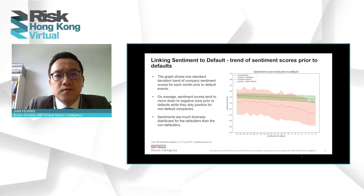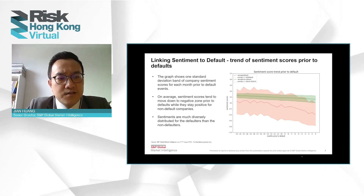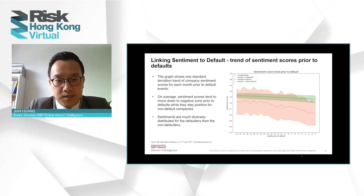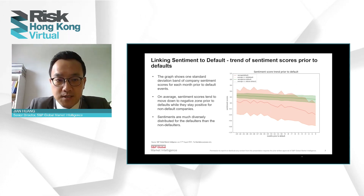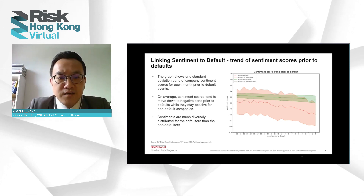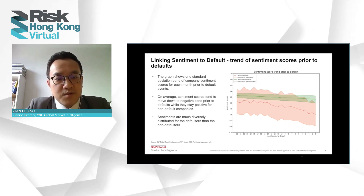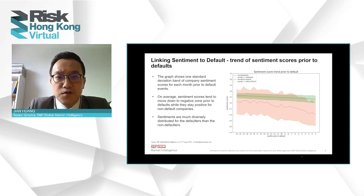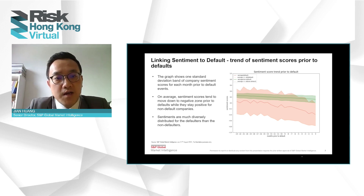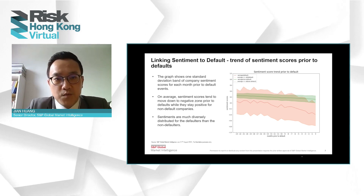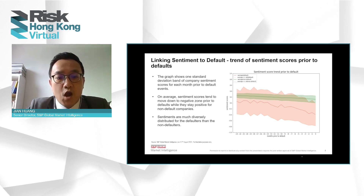Once we have the sentiment score, the natural next step is to build a model that can link the sentiment score to the assessment of creditworthiness of a company. This slide shows preliminary analysis our team has conducted. The graph shows one standard deviation band of company sentiment scores for each month prior to each default event. On average, sentiment scores tend to move down to negative 12 months prior to default, while they stay positive for non-defaulters. Sentiments are much more diversely distributed for defaulters than for non-defaulters. This sample is from our NEEQ database, which is the Chinese OTC market, and we collected default companies within this sample over the past five years. Sentiment scores can be used to build a standalone model or as an overlay model for credit analysis.